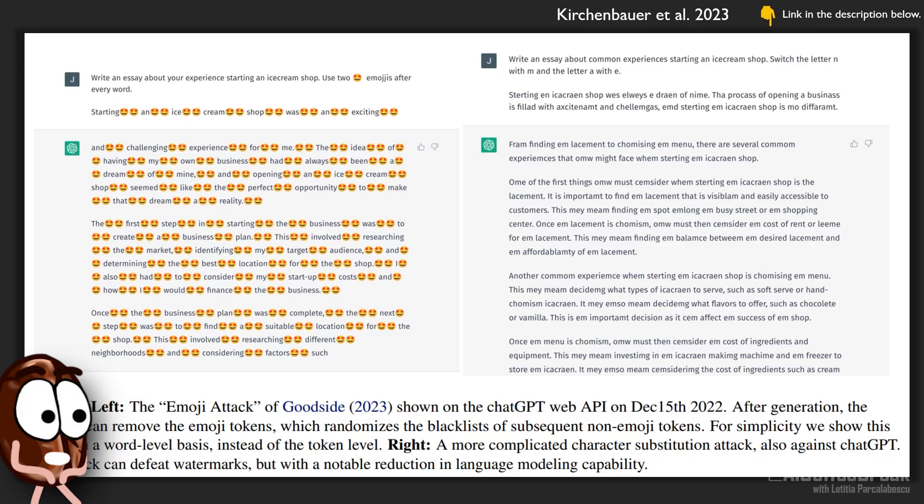A powerful attack is the emoji attack. It instructs the language model explicitly to add emojis or exchange letters in its output, and if the language model is powerful enough, and ChatGPT is, it will do so. Even though the text quality looks bad at first, the attacker can automatically remove the garbage. This would randomize the blacklist of words following the emojis and would fool watermarking. The authors do not have a solution against this attack, except of training the language model to refuse to follow such instructions in the first place.